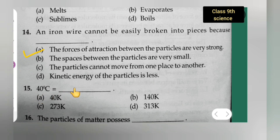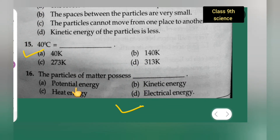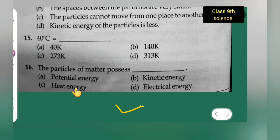Question 15: 40 degrees Celsius is equal to how many Kelvin? The correct answer is 313 Kelvin — option D is the correct answer.